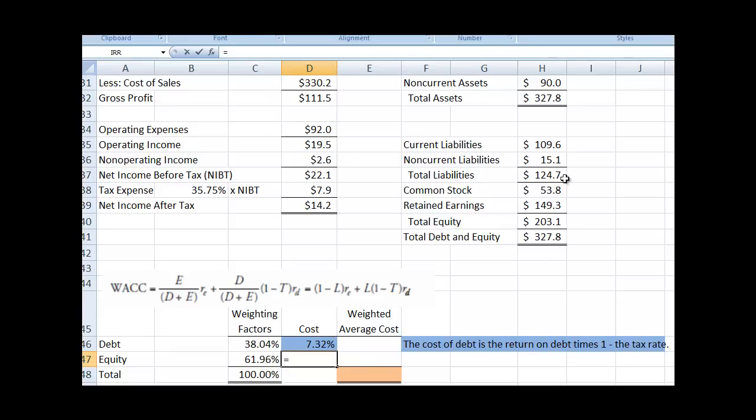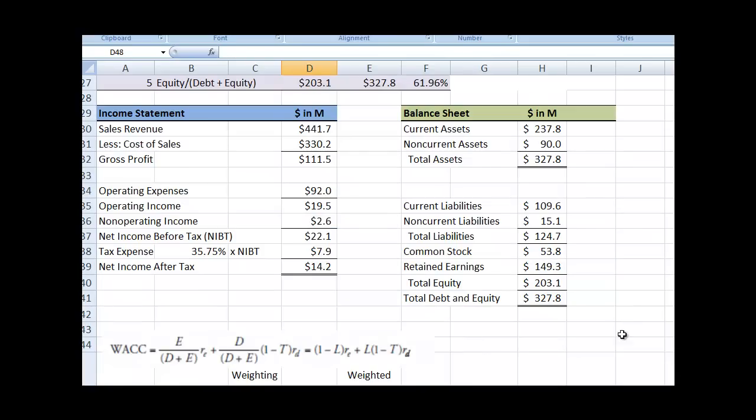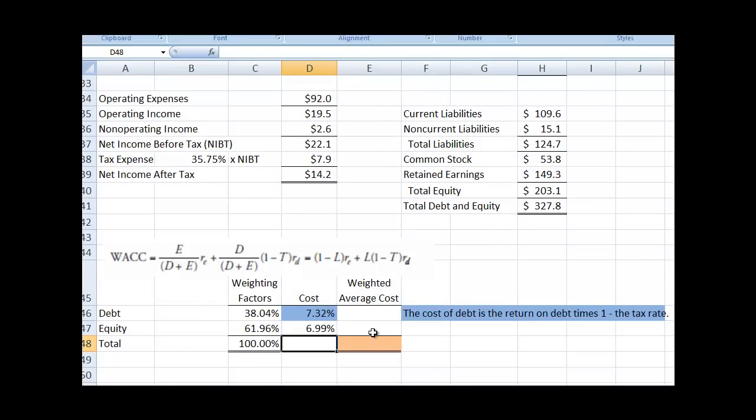Okay, so the next one is our cost of equity. And we also have that up here, which is the return on equity, which is the 6.99%. So we'll pick that one up. It comes down here. Put it in our formula.